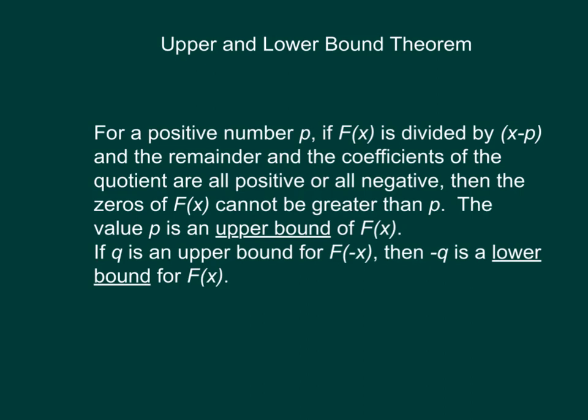So practically, you would never try a value bigger than p. If that condition is met while you're testing, there's no point going above that value. If q is an upper bound of f(negative x), then negative q is a lower bound for f(x). This theorem is just one to keep in mind when you are testing numbers to find the zeros of your polynomial.